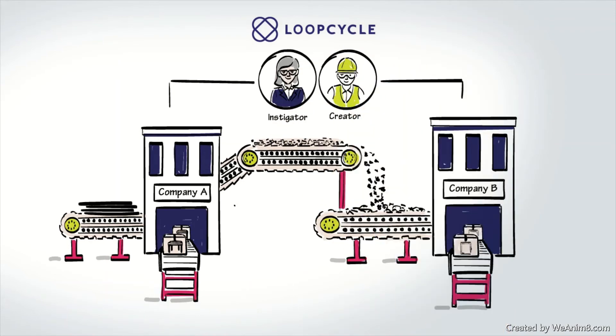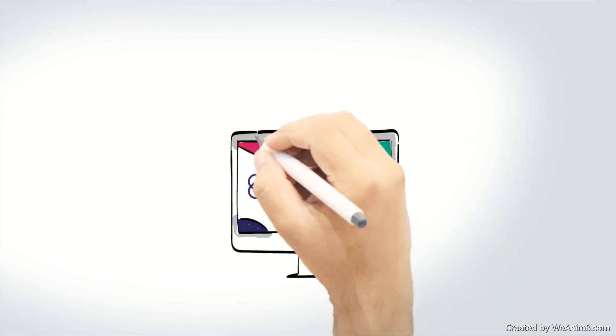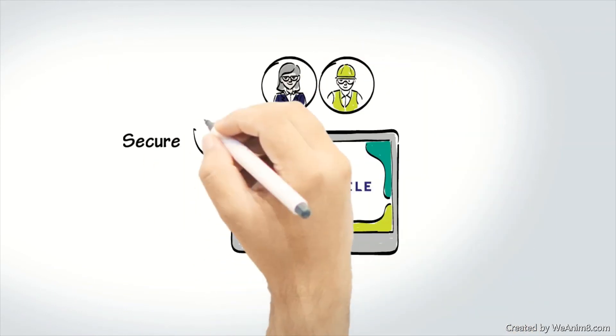This pairing is called a cycle. Using blockchain technology, a digital material ledger ensures that the cycle is both secure and traceable.